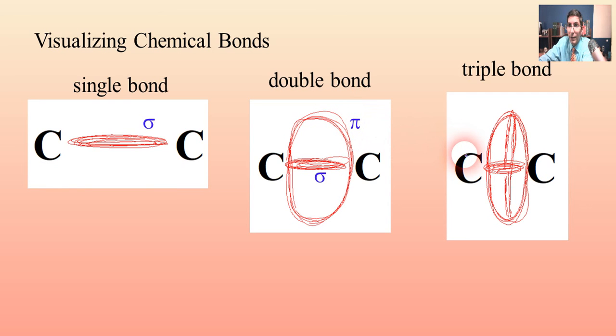A triple bond, on the other hand, has one of those straight bonds, but it has two of those looped bonds. And so a triple bond consists of a sigma bond and two pi bonds.